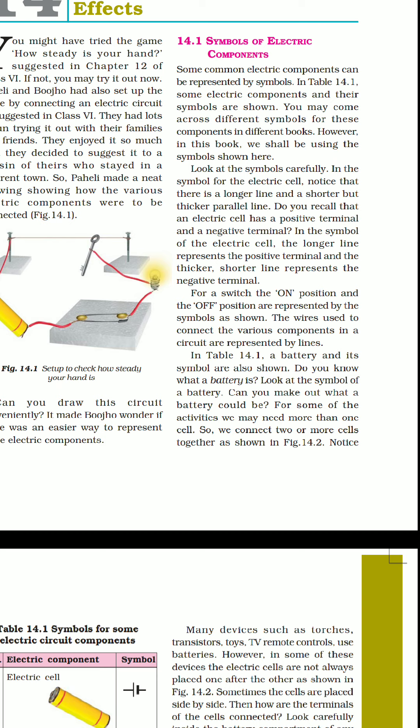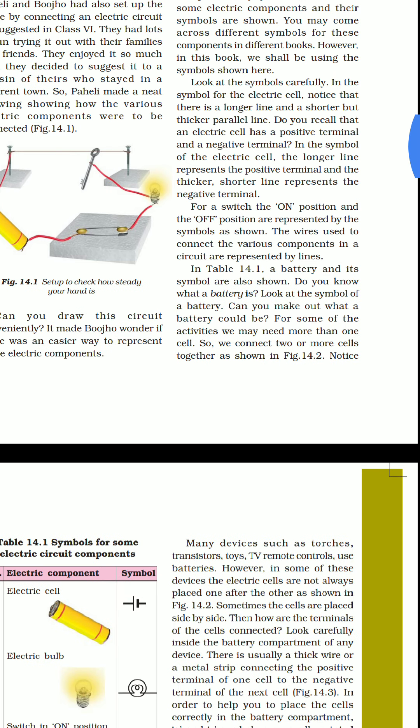However, in this book we shall be using the symbols shown here. Look at the symbols carefully. In the symbols for electric cell, notice that there is a longer line and a shorter thicker parallel line. Do you recall that electric cell has a positive terminal and a negative terminal? In the symbol of electric cell, the longer line represents the positive terminal and the thicker shorter line represents the negative terminal.